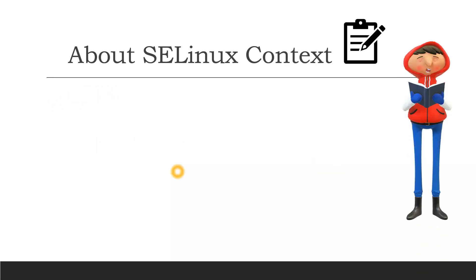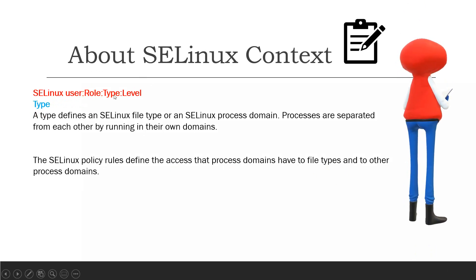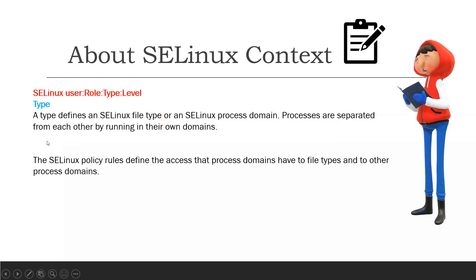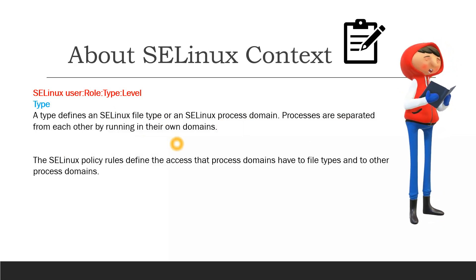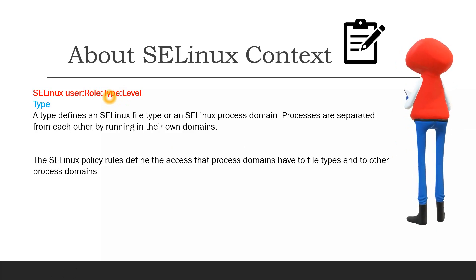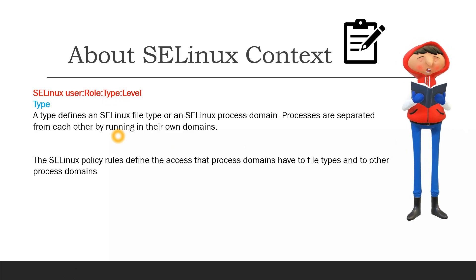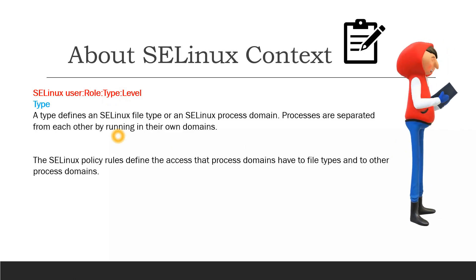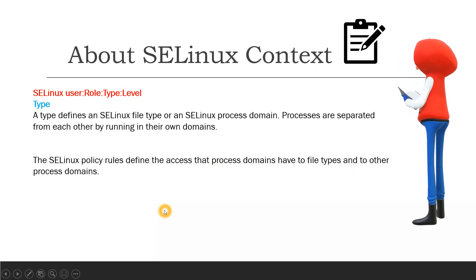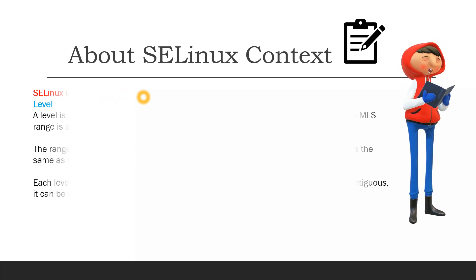The type is the third level of labeling, coming after the role. A type defines an SELinux file type or an SELinux process domain. Processes are separated from each other by running in their own domains. This type labeling prevents processes from accessing files that other processes use, and prevents processes from accessing other processes. SELinux policy rules define the access that process domains have to file types and other process domains.